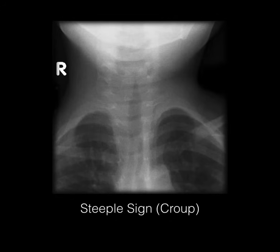Steeple sign — just like the thumbprint sign, anything to do with the airway is super high yield, definitely top five. This is seen in croup, and it's supposed to look like the steeple of a building because you have subglottic narrowing.